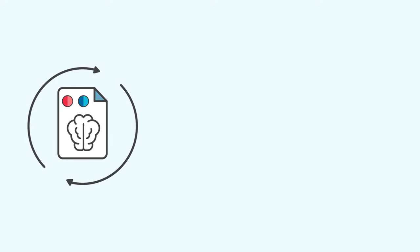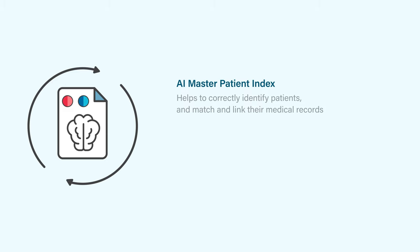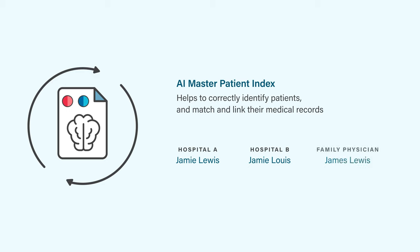Let's talk about some of the features within Omega AI V&A. The AI Master Patient Index helps to correctly identify patients and match and link their medical records. The MPI improves matching capabilities by using artificial intelligence or machine learning algorithms.